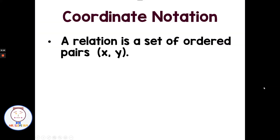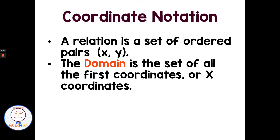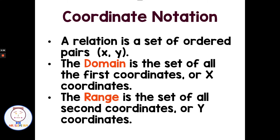Let's start with coordinate notation. A relation is a set of ordered pairs — it's like having an x value and a y value. The domain is the set of all first coordinates or x coordinates, and the range is the set of all second coordinates or y coordinates. So the domain is all our x values and the range is all the y values.